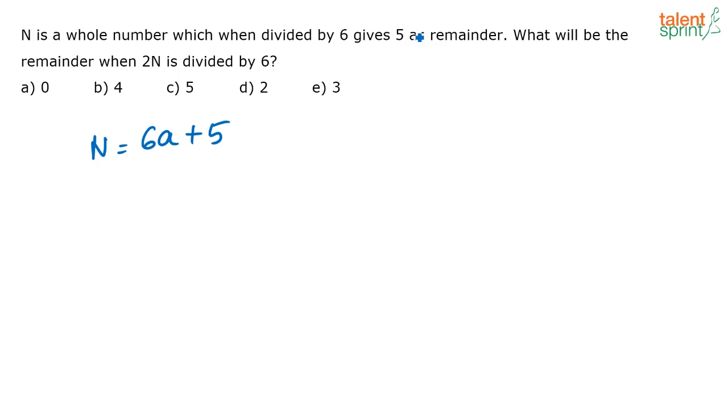See, the number is giving a remainder 5. So if the number was a multiple of 6, it should not have given any remainder. In that case, the general way in which you can express the number is 6a. If a number is a multiple of 6, I can generally say that the number can be expressed as 6a.